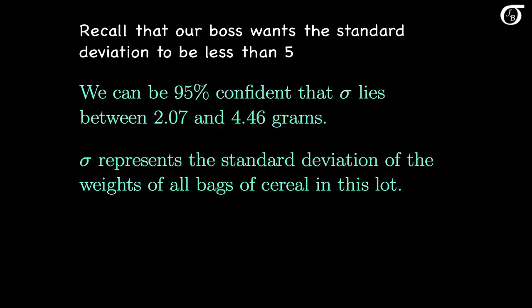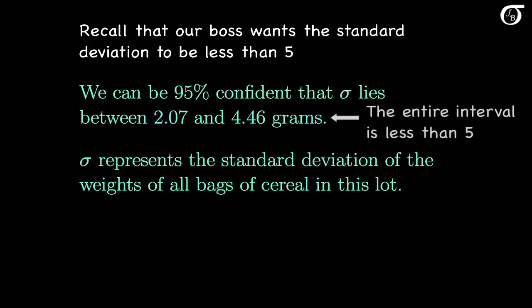Sigma represents the standard deviation of the weights of all bags of cereal in the large lot from which we drew our sample. Recall that our boss wanted us to show strong evidence that the standard deviation is less than 5. Note that the entire interval lies to the left of 5, so based on this interval we have pretty strong evidence that the true standard deviation is indeed less than 5. But since showing strong evidence that the standard deviation is less than 5 is our point of interest, we can carry out a more formal hypothesis test.